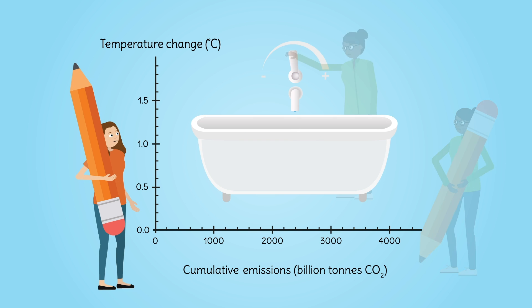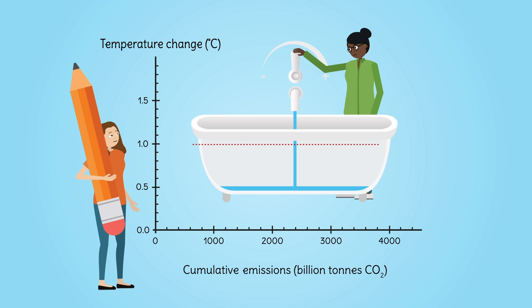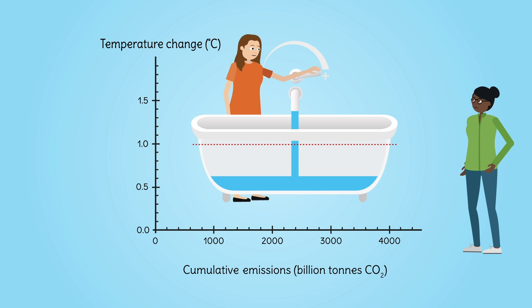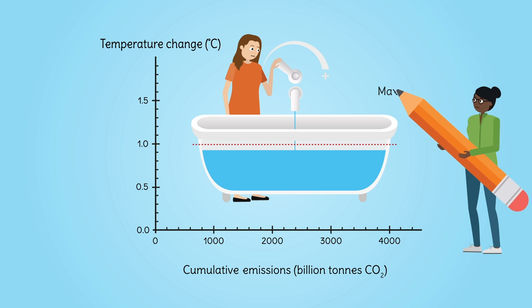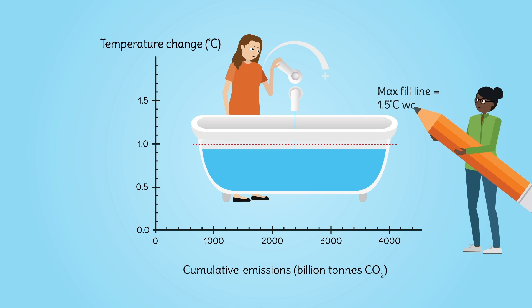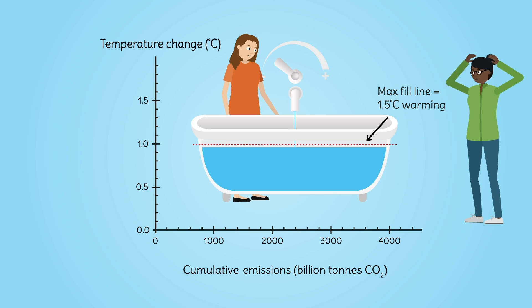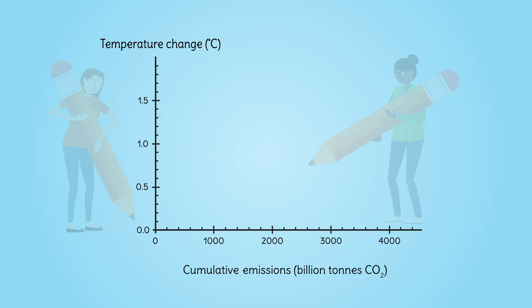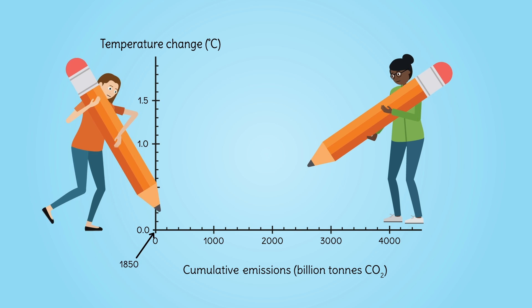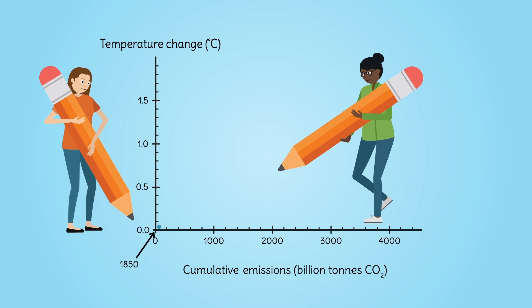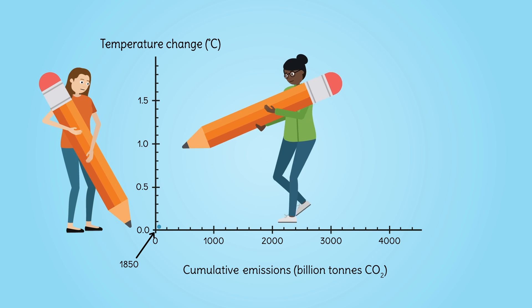Imagine the atmosphere as a bathtub. We've had the taps on non-stop since the industrial revolution. What matters is not how quickly the bathtub fills, but the total amount we can add to it before it overflows — that's what drives climate change. The only way to limit warming is to stop putting carbon into the atmosphere altogether — in short, turning the taps off and reaching zero emissions.